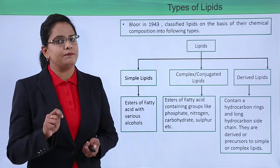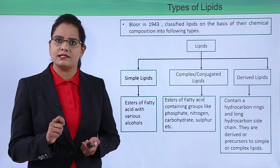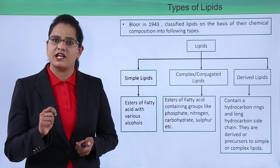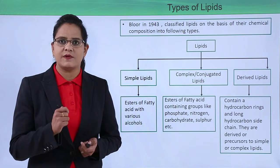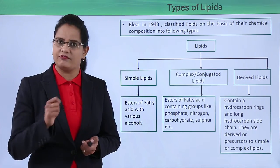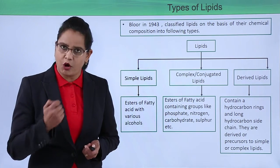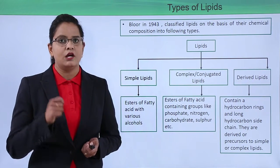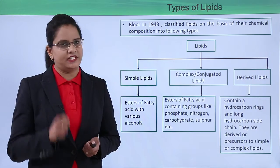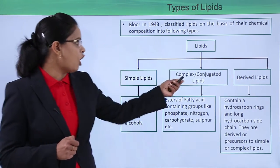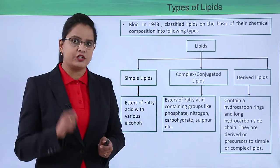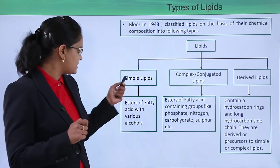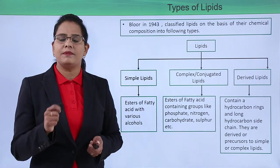Bloor was a scientist who in 1943 classified lipids on the basis of their chemical composition — what type of alcohol is present, what type of fatty acid is present, what type of bonds are present, and what type of elements are present. Based on this, lipids were classified into three types: simple lipids, complex or conjugated lipids, and derived lipids.